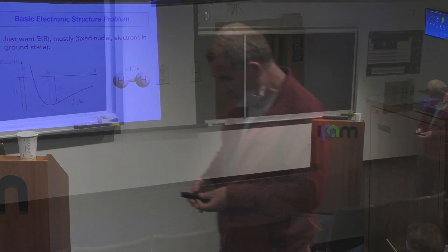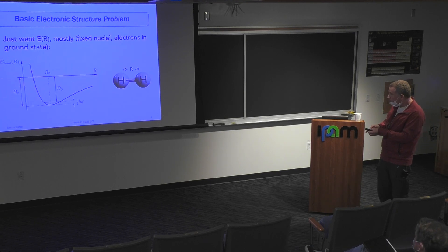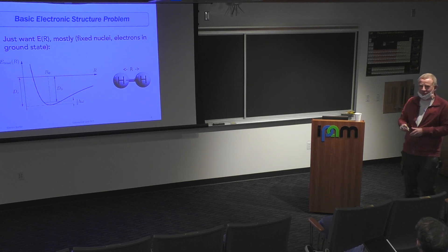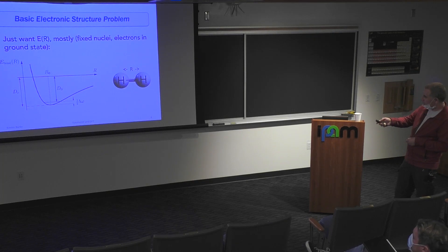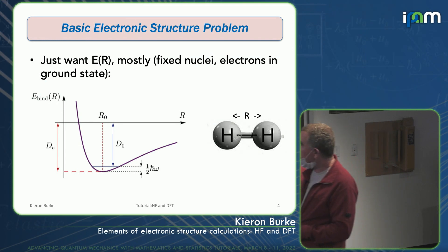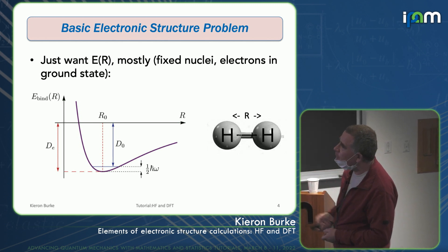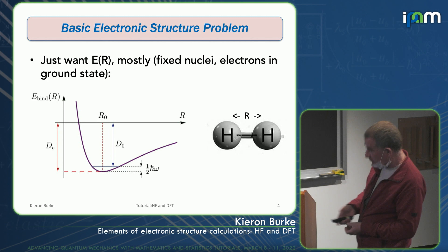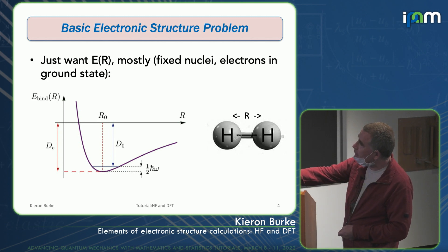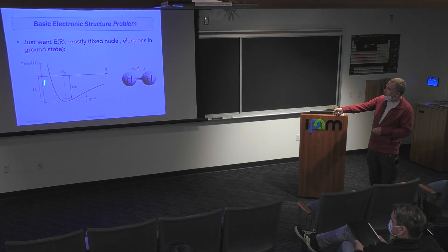So 'first principles' is what we'll use. The simplest problem you can think of is H2, the hydrogen molecule. We take the nuclei as classical, choose the separation between them, and want to find the lowest energy state — the ground state of the electrons. If we do that, we can calculate the energy as a function of separation, calculate this binding energy curve. Because at room temperature the electrons are essentially in their ground state, once we have that curve, we can calculate lots of properties.